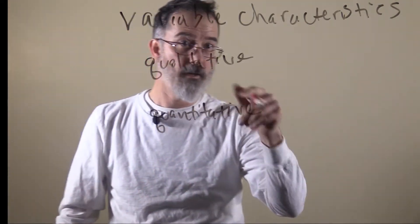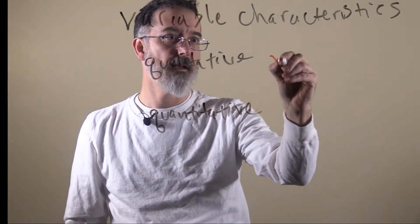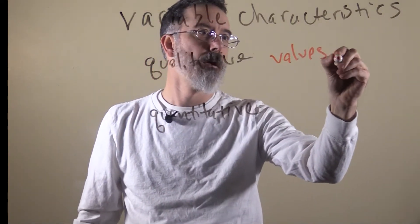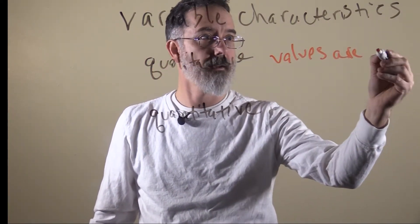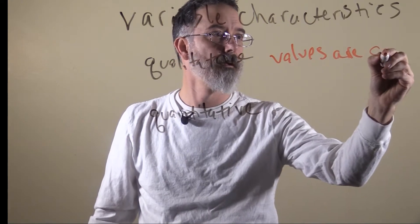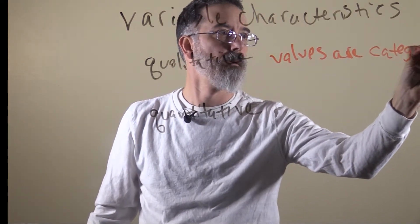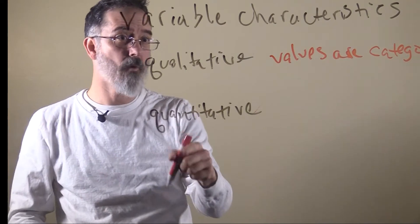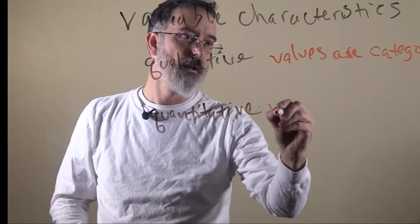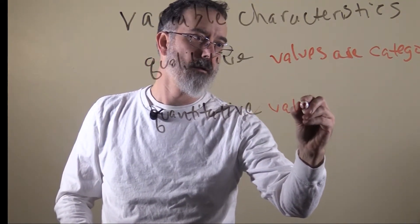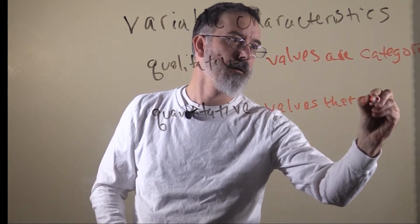A qualitative variable is one where the values are qualities or categories, whereas a quantitative variable has values that are numbers.